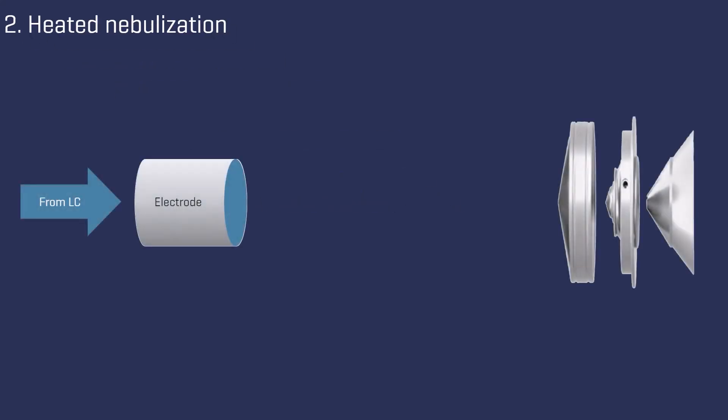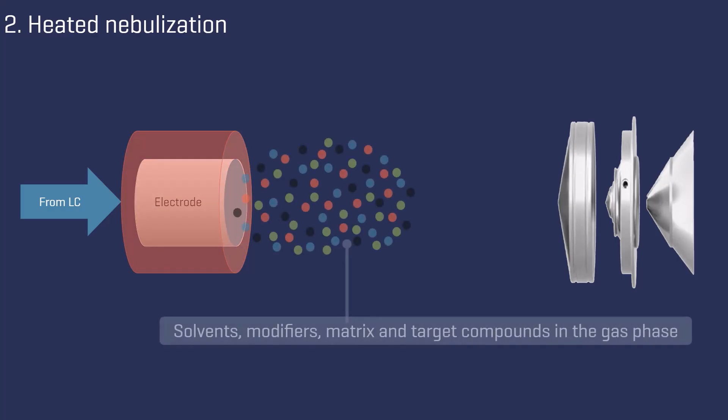In parallel, the liquid from the LC flow exits the electrode and enters the ion source. This area is effectively heated, causing the components of the LC flow — that is, solvents, modifiers, matrix, and target compounds — to be transferred into the gas phase.